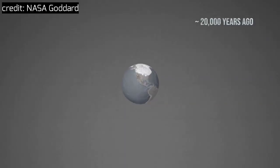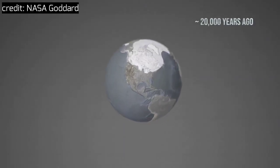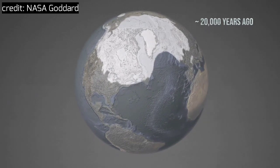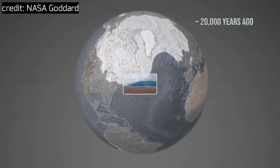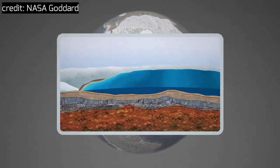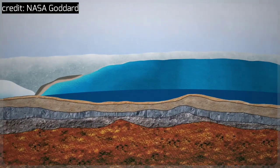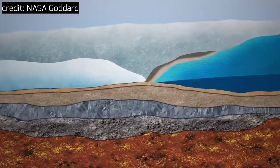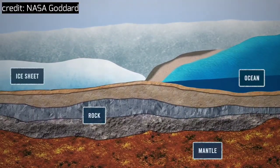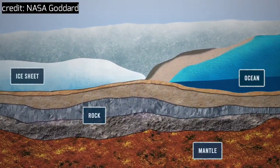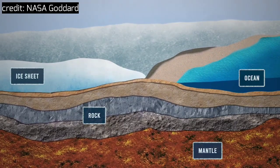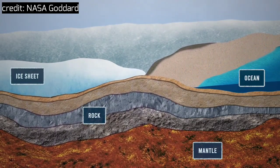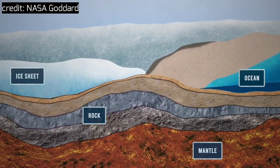Around 20,000 years ago, ice sheets covered large areas of our planet. In many places, the weight of these massive ice sheets pressed down on the planet's crust and viscous mantle underneath. This weight caused the surrounding land to rise and the sea levels to fall relative to that rising land.